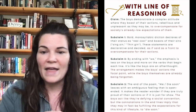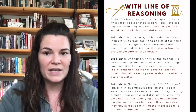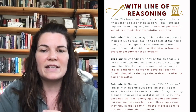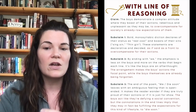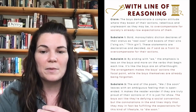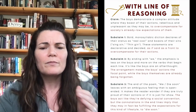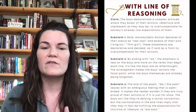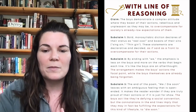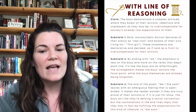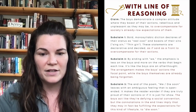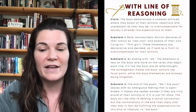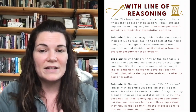Looking at my subclaims: the first hasn't changed — still going to talk about that diction — but now I'm going to tie it to the line of reasoning, saying it's as if it was said as a front to overcompensate for their actions. Subclaim two is still the same, but I added that the arrangement makes the boys' actions the focal point, while the boys themselves are already being forgotten. In subclaim three, I added that the boys act like they're defying a social convention, but the connotations in the end lines imply that they may, in fact, be fulfilling the expectations for this kind of lifestyle — to die soon.